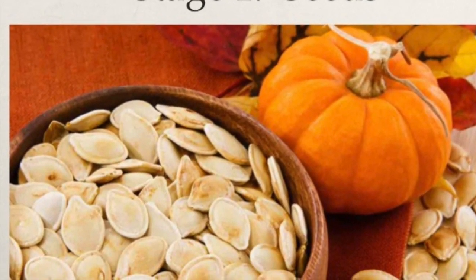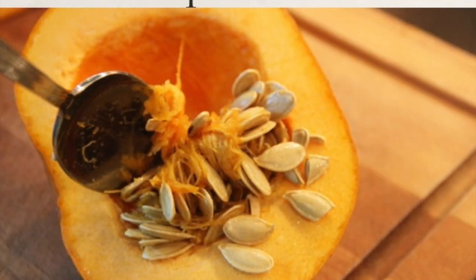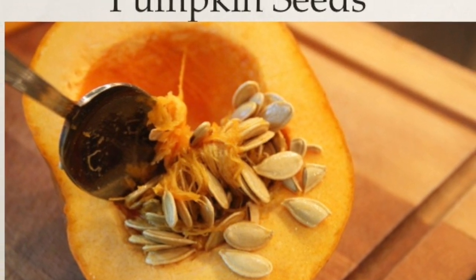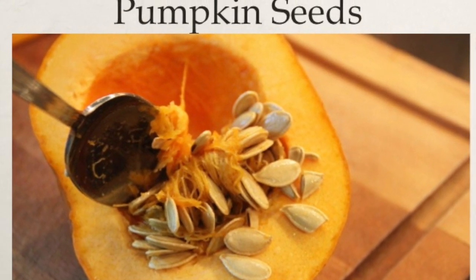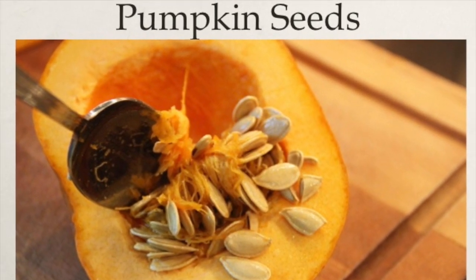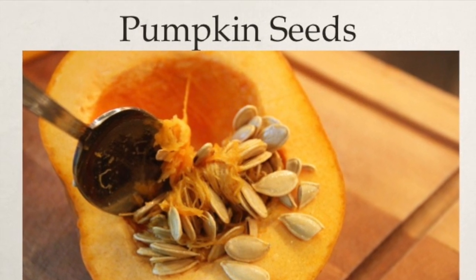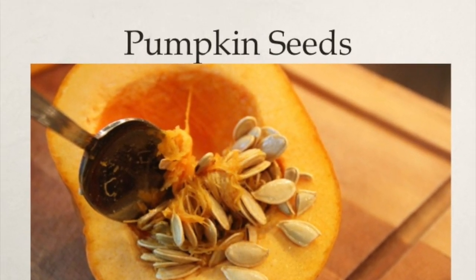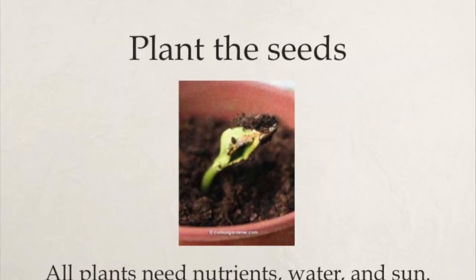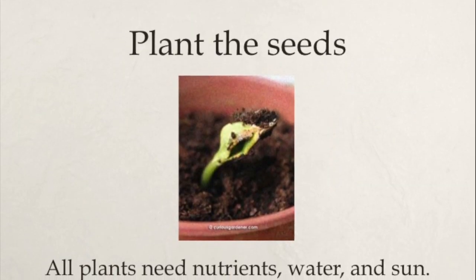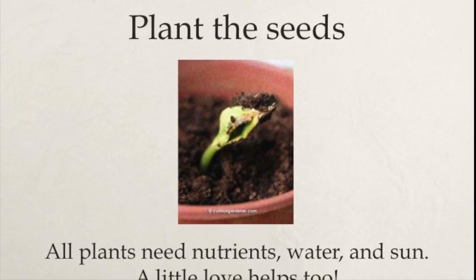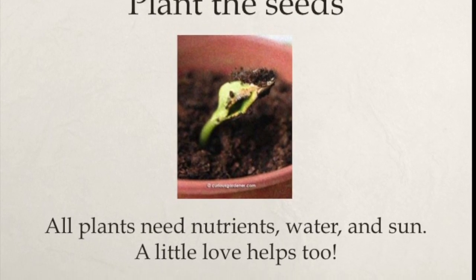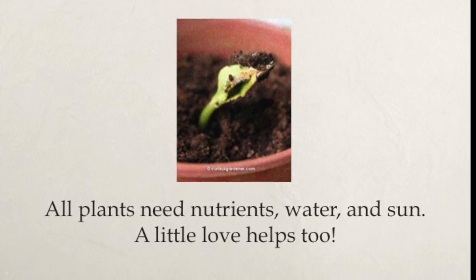Stage one are seeds. If you've ever carved a pumpkin in the fall, you know that there are lots of seeds and pulp inside of each pumpkin. And if you take some of those seeds, clean them up, and plant them in good nutritious soil, give them some water, warm sunshine all summer, and a little bit of love.